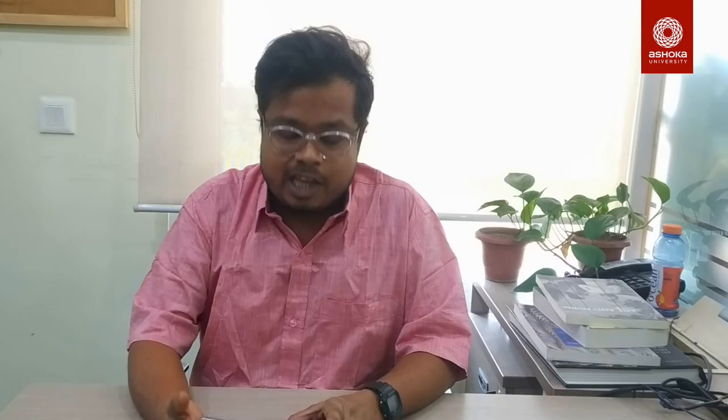The next book I have on my desk is called The Question of Style in Philosophy and the Arts, edited by Caroline Van Eyck, James McAllister, and Rene Van de Waal. It concerns the question of style and how that is used in the study of art history, history of architecture, and art criticism and theory.